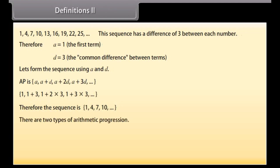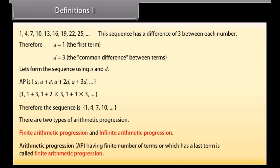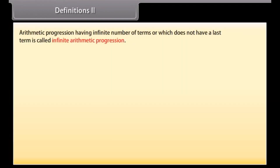There are two types of arithmetic progression: finite arithmetic progression and infinite arithmetic progression. A finite arithmetic progression has a finite number of terms, meaning it has a last term. An infinite arithmetic progression has an infinite number of terms and does not have a last term.